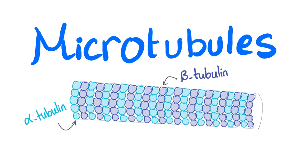Hey guys, it's Medicosis Perfectionalis, and today let's talk about the second item of the cytoskeleton, also known as microtubules. We have alpha tubulin and beta tubulin. If it ends in I-N, it's usually a protein. And let's get started.